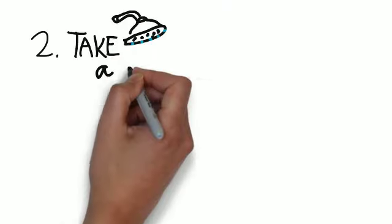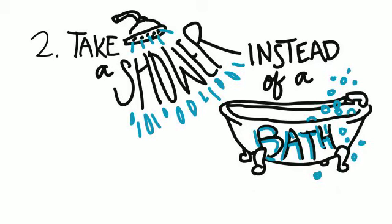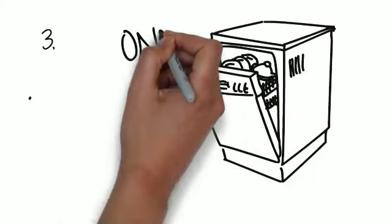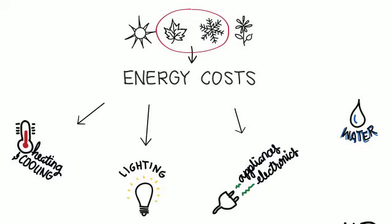Taking shorter showers instead of baths is also essential for reducing energy costs. Low flow shower heads aren't very expensive, are easy to install, and will help you find additional energy savings. In the kitchen, don't run the dishwasher if there are only a few dirty dishes to wash. Only wash full loads of dishes.